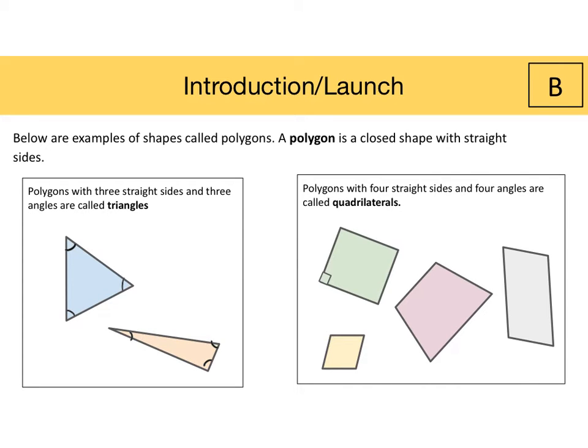Here's where explicit instruction begins. Below are examples of shapes called polygons. Again, a polygon is a closed shape with straight sides. Polygons with three straight sides and three angles are called triangles. Polygons with four straight sides and four angles are called quadrilaterals. You might want to let students know that there are different types of triangles and different types of quadrilaterals, and that this will be discussed at a later time.